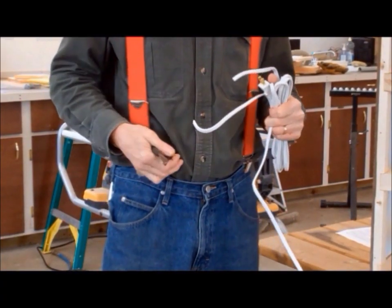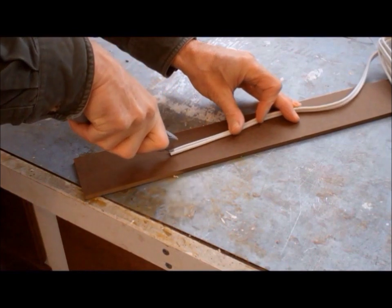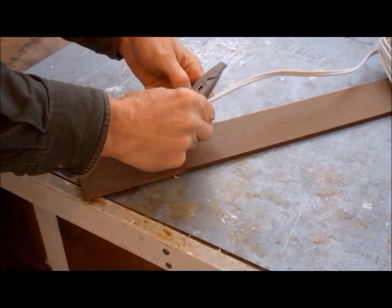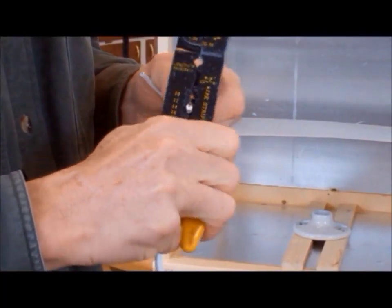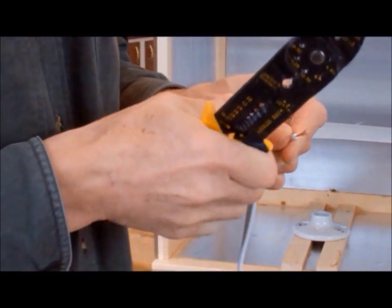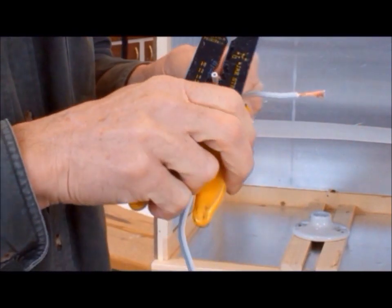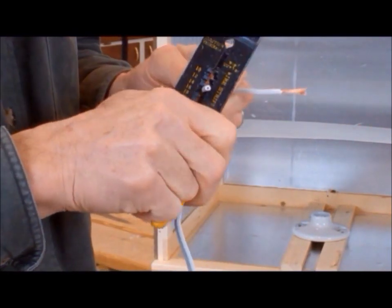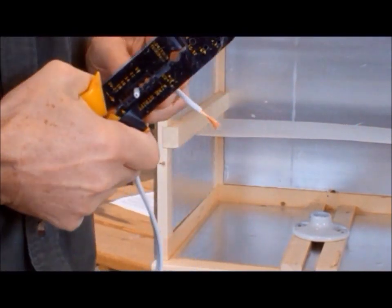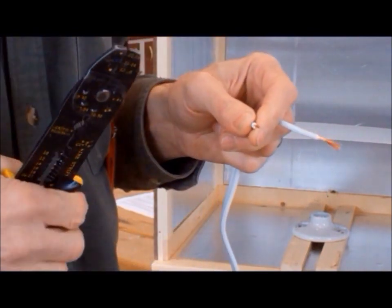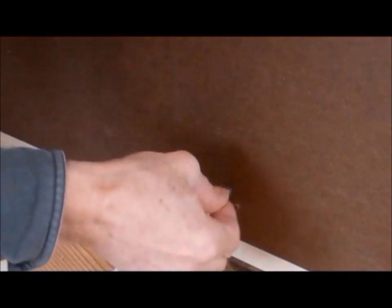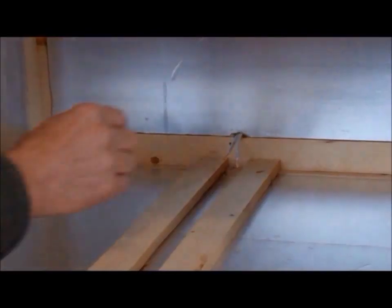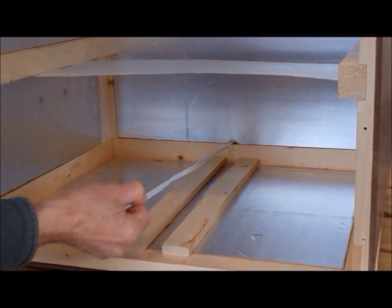To prepare the extension cord, first cut off the receptacle end. Then split the end about four inches. And strip about three quarters of an inch of insulation from each wire. Pass the cord from the back side through the hole you just drilled. And pull from the inside to give you enough wire to work with.